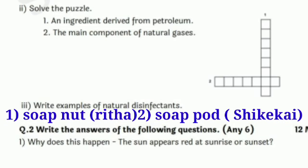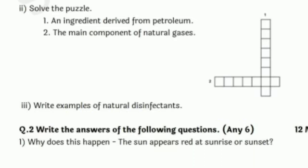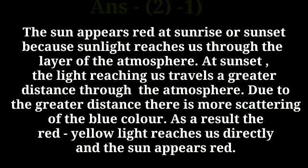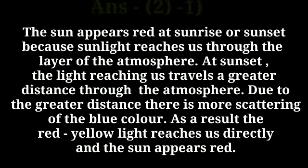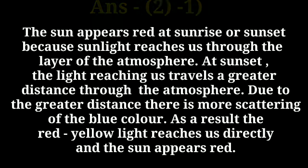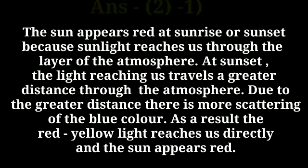Question number 2: why does this happen? The sun appears red at sunrise or sunset. Answer: the sun appears red at sunrise or sunset because sunlight reaches us through the layer of the atmosphere. At sunset, the light travels a greater distance through the atmosphere. Due to this greater distance, there is more scattering of blue color. As a result, the red-yellow light reaches us directly and the sun appears red.